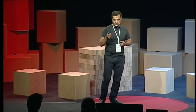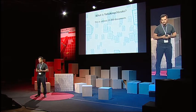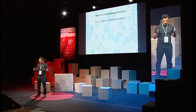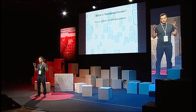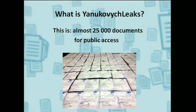So what is Yanukovych Leaks? This is a website where 25,000 documents have been placed — documents that Ukrainian journalist investigators found at ex-Ukrainian president Yanukovych's main residence. After being found, these documents were uploaded for public access on the Yanukovych Leaks web platform, and you can find all these documents on yanukovich.org.